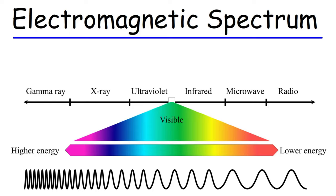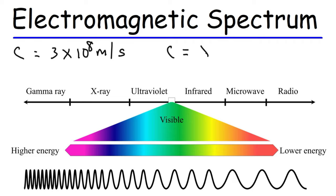In this video, we're going to talk about the electromagnetic spectrum — all of the electromagnetic radiation and the different types that can be carried by photons. All of these electromagnetic waves travel at the speed of light, which is 3 times 10 to the 8 meters per second. The speed of light of an electromagnetic wave is equal to the wavelength times the frequency.